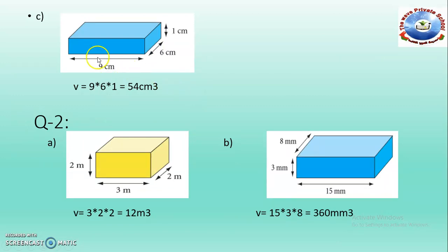Part C: length is 9 cm, width is 6 cm and the height is 1 cm. Just multiply length by width by height and you get the answer: 54 cubic centimeters.